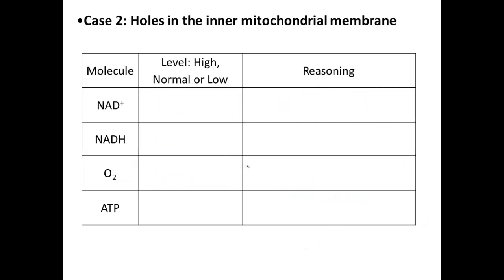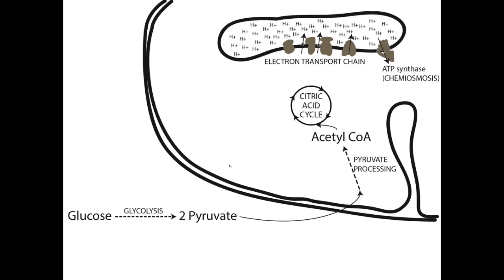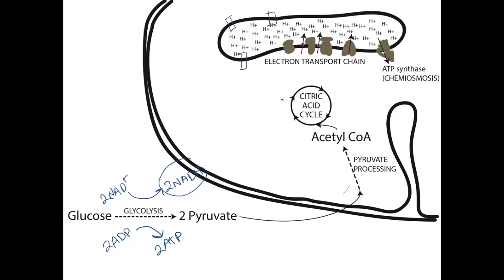What about the second case — holes in the inner mitochondrial membrane? If we punch holes in this inner membrane, then all of the steps that come before the electron transport chain, and in fact even the electron transport chain itself, will function just as normally because nothing in those steps is being blocked. So the levels of everything produced by these early steps are going to be the same — everything goes as normal up through the electron transport chain step.